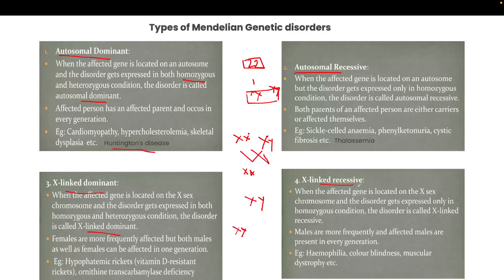X-linked recessive disorder occurs when the affected gene is located on the X chromosome and the disorder is expressed only in the homozygous recessive condition. Males are more frequently affected and affected males are present in every generation, since that X chromosome carrying the disorder gene is passed down each generation. Examples include hemophilia, color blindness, and muscular dystrophy.